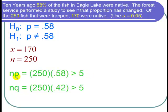np is equal to 250, that's n, times P which is 0.58, and that's certainly bigger than 5.